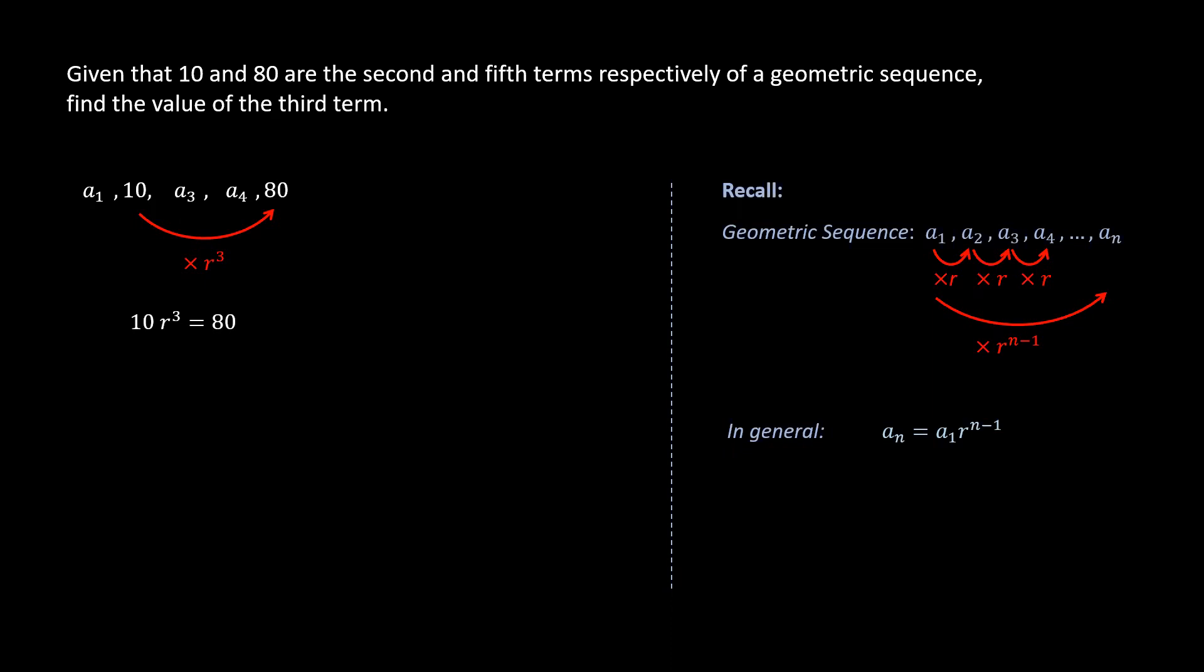Now we have 10 multiplied by r cubed equals 80. We can divide both sides by 10. Then we get r cubed equals 8. Then we cubic root both sides to obtain r to be 2.